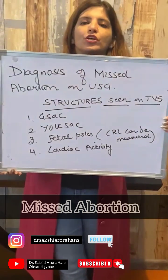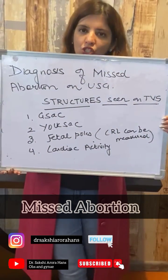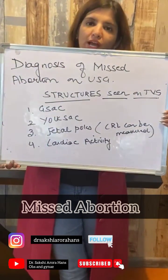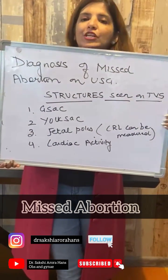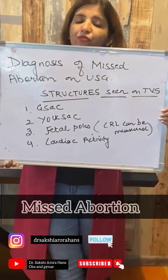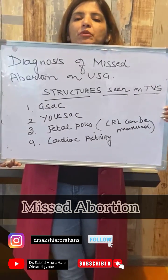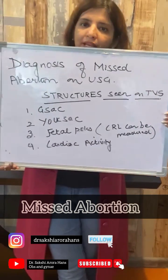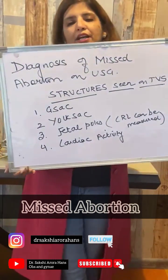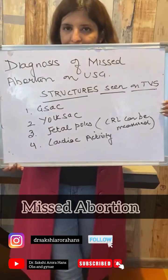The first structure which you see on TVS is the gestational sac. This is followed by the yolk sac, then fetal poles are visible. When the fetal poles are visible, crown-rump length (CRL) can be measured, and then cardiac activity is seen.